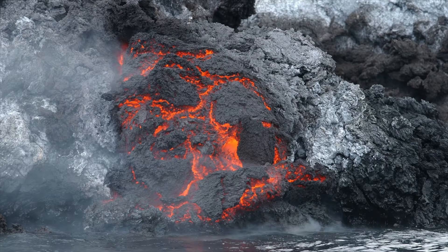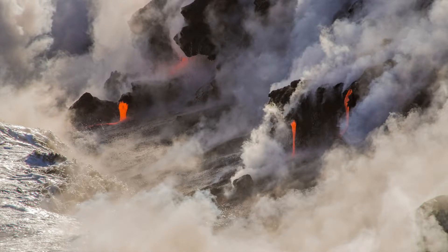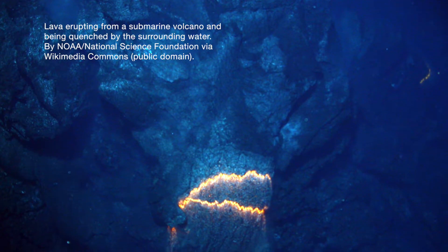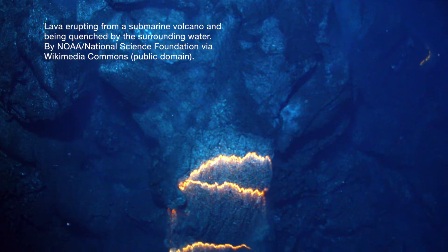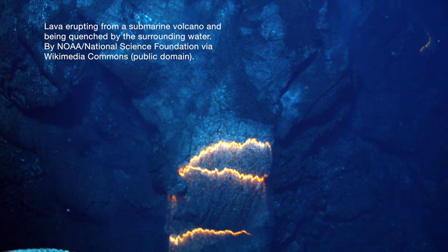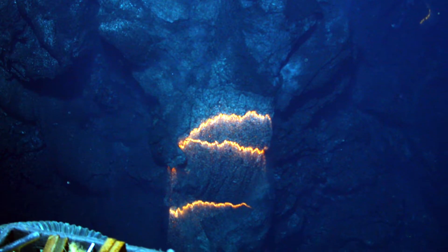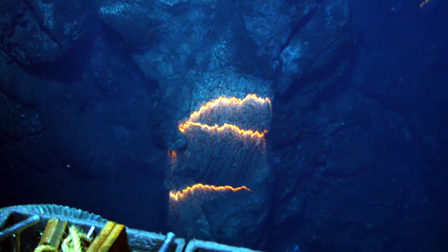One way to cool lava quickly enough to make obsidian is to expose it to seawater. The open ocean is incredibly cold, and it's also where most of the world's basaltic lava is generated. When it erupts under the sea, it is quenched almost instantly. The outside forms a dome-shaped layer of obsidian that insulates the inside of the dome, so it has a little more time to cool and form a rock with crystals inside.